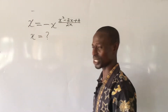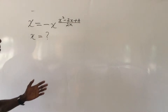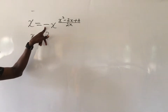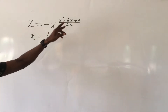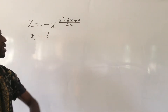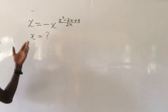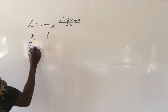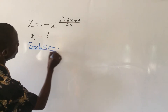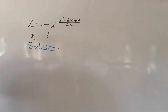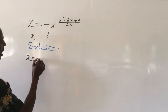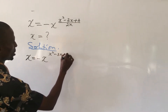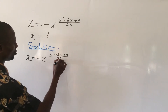Sit back and relax as we dive into today's challenge. Here, we have a question which says x equal to minus x to the power of x squared minus 3x plus 4, all over 2x. What would be the possible value of x from this expression?